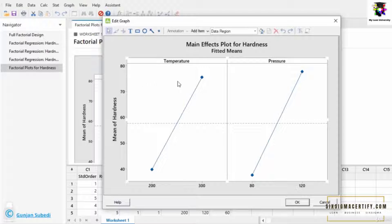If this line had been straight and horizontal, then we would understand that there is no effect of temperature on the mean hardness of the plastic.